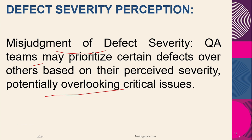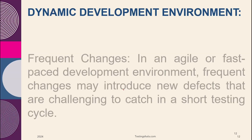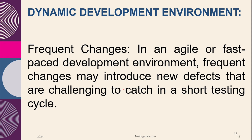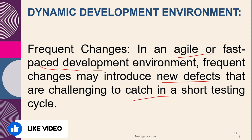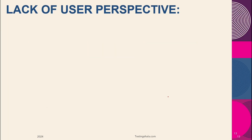The next reason is the dynamic development environment, which is very crucial especially when working in agile or fast-paced development environments. Frequent changes to the code may introduce new defects that are challenging to catch in a short testing cycle — this is also a reason where the testing team could have missed defects.